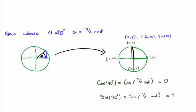When theta equals 90 degrees, we bring the point up to 90 degrees on the unit circle. Here x equals 0 and y equals 1. This means the cosine of 90 degrees, or pi over 2 radians, is 0, and the sine of 90 degrees, or pi over 2 radians, is 1. So: cos 0 = 1, sin 0 = 0, cos 90 = 0, sin 90 = 1.